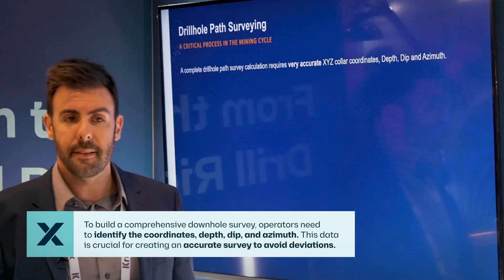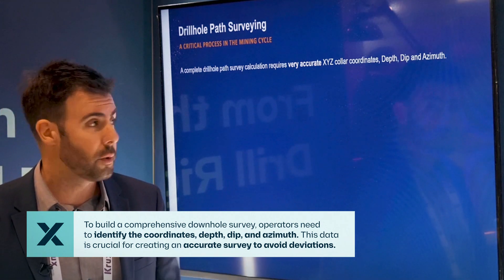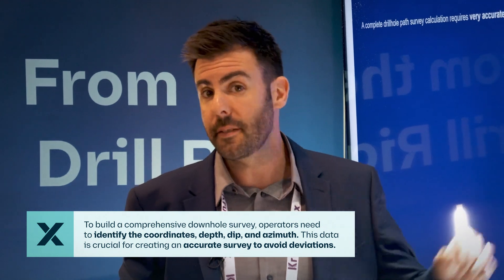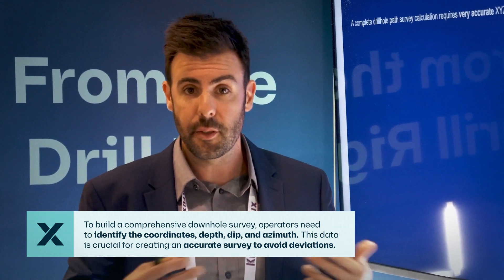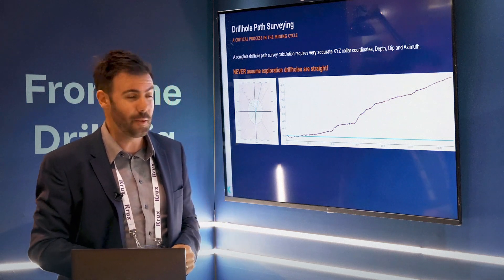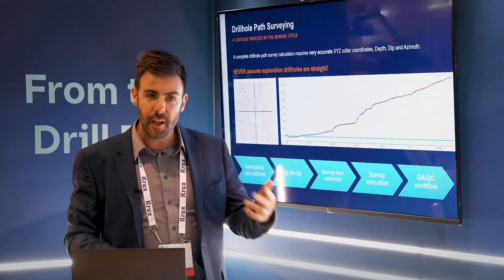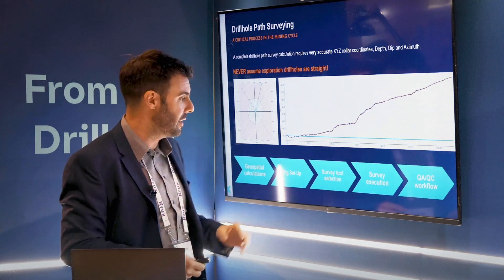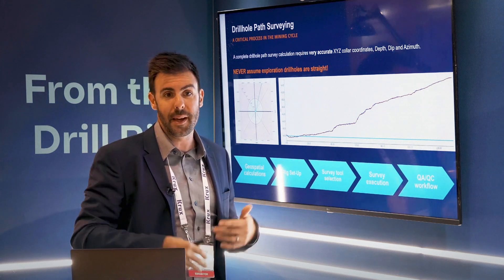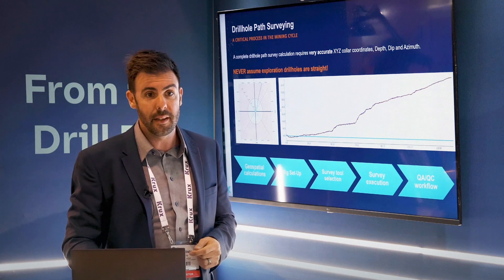To build a complete downhole survey we need a set of XYZ coordinates — the collar coordinates — and then we need a depth, dip, and azimuth. Based on that data we can actually build the survey. There is sometimes the assumption that we are drilling straight holes, but sadly that rarely happens. Deviation occurs and is not always controllable, so we have to deal with it — that's the reason we do those surveys. When we talk about errors, we usually refer to the accuracy of a tool or the setup, but it's a combination and accumulation of errors which creates those potentially large mistakes that can compromise a project.